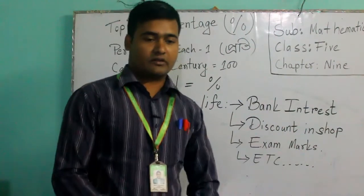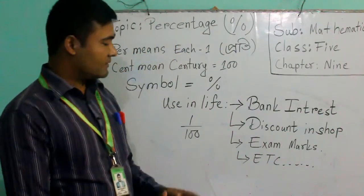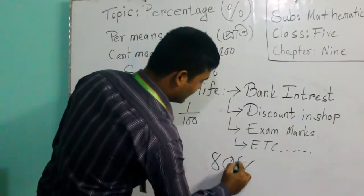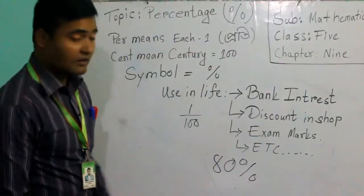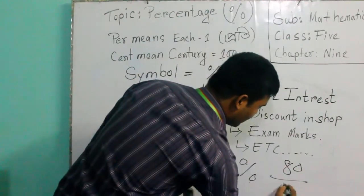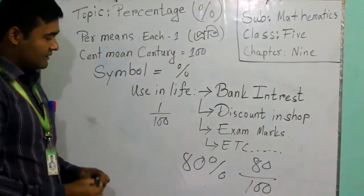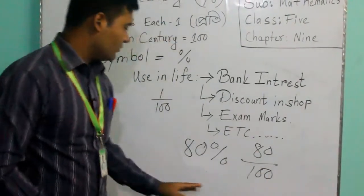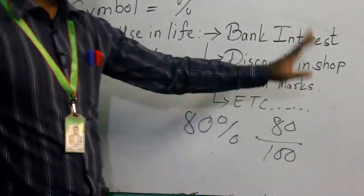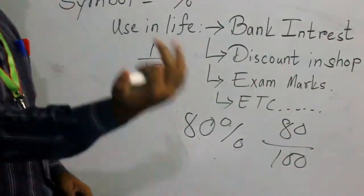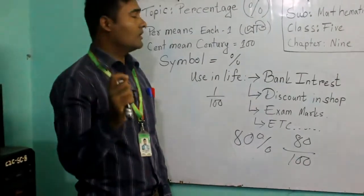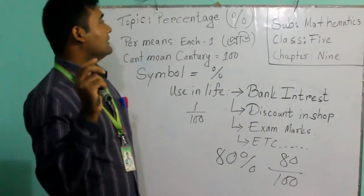From this chapter we will learn that percentage system. In exam marks, several times you have seen that exam times teachers are giving like you got 80 percent. That means you got 80 marks out of hundred. Except for whatever, in our life there are lots of things you can learn from percentage and it is very important for grade 5 to learn this chapter.